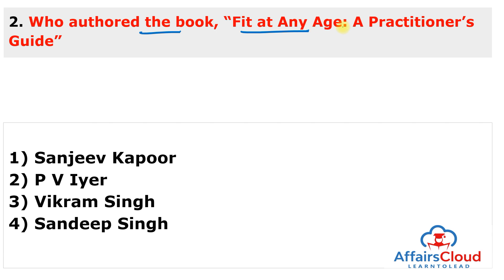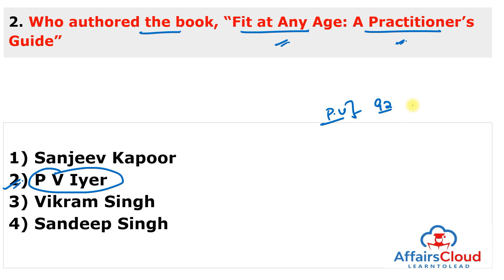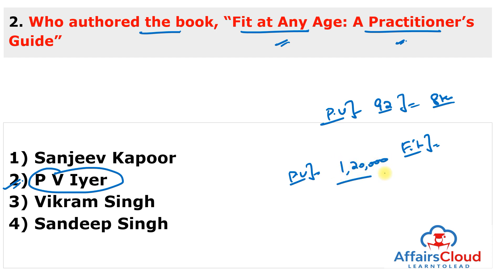Next question: Who authored the book 'Fit at Any Age: A Practitioner's Guide'? The answer is retired Air Marshal PV Iyer. He is 92 years old and runs 8 kilometers a day. He authored and launched this book, which tells how people can make fitness a part of their everyday activities at any age, leaving sufficient time for leisure. Air Marshal PV Iyer began a fitness journey that allowed him to run over 1 lakh 20 thousand kilometers.